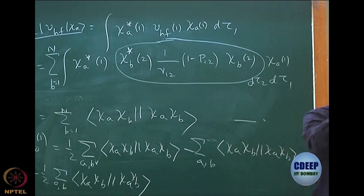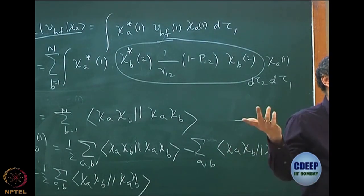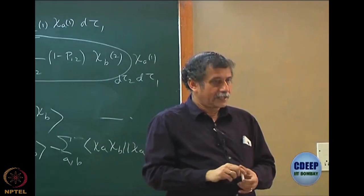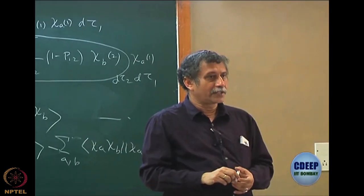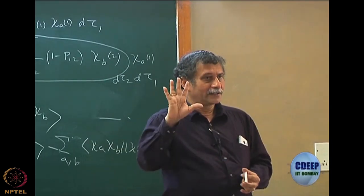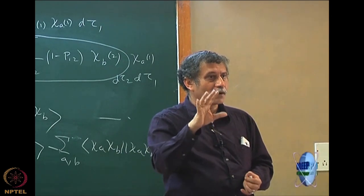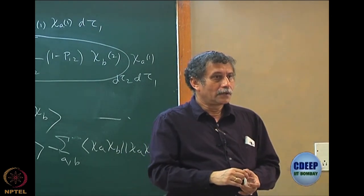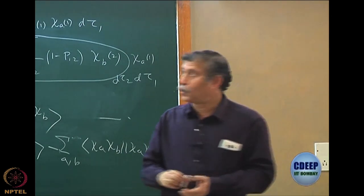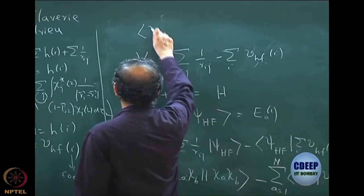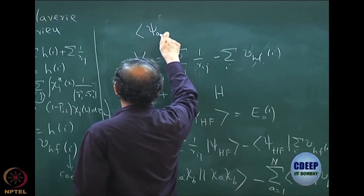You cannot take one excited state of H0 and start to do perturbation theory from it — that would be the wrong way to do it. They are excited determinants of H0, of course, but have nothing to do with actual excited states. So, the first order: I have E01, and I proceed from there.